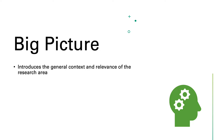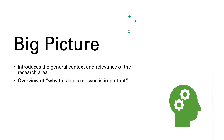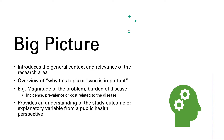The introduction starts with the big picture, which introduces the general context and relevance of the research area and provides an overview of why this topic is important. For a research paper in population and public health, it's a good idea to present broader background information on the health-related topic, such as the magnitude of the problem or burden of disease — for example, incidence, prevalence, or cost related to the disease. The big picture provides an understanding of the study outcome or explanatory variable from a public health perspective.